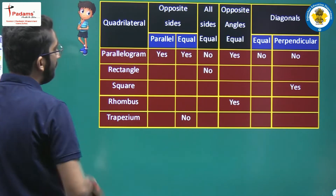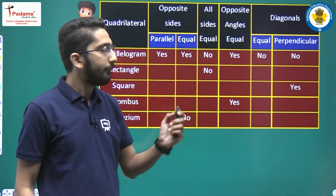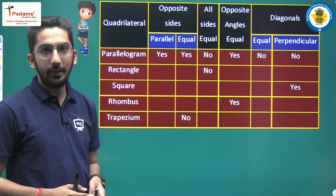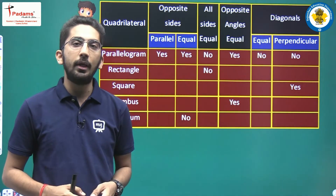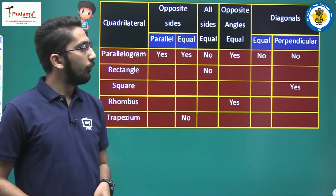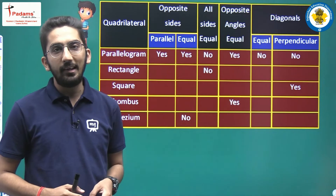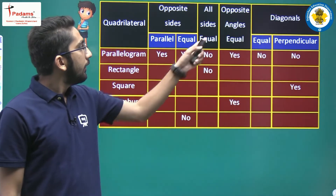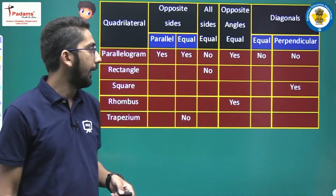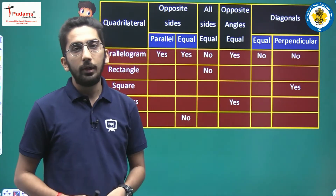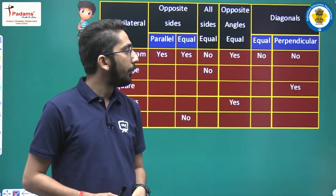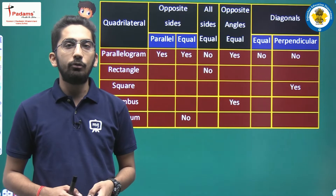For the parallelogram, it is already filled. Opposite sides parallel: yes. Opposite sides equal: yes — both parallel and equal in a parallelogram. All sides equal: no, not all sides are equal. Opposite angles equal: yes, opposite angles are also equal in a parallelogram. Diagonals are equal: no. Diagonals are perpendicular: no — they do not intersect at 90 degrees.